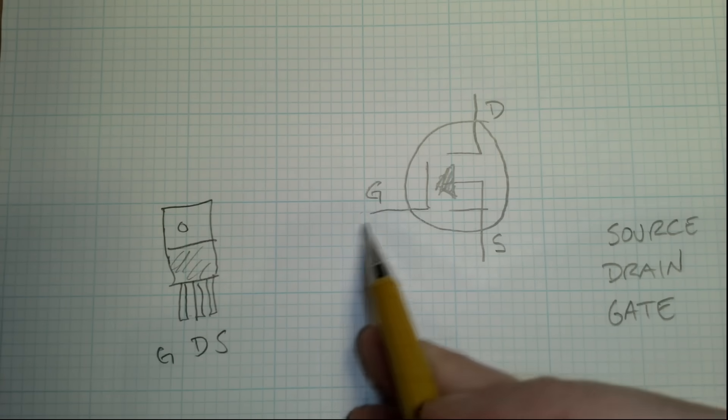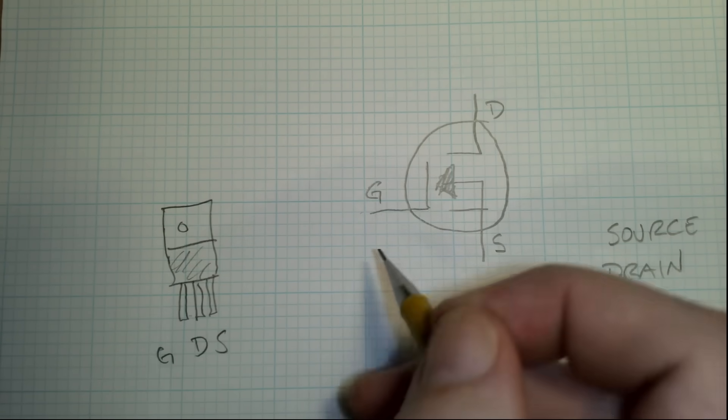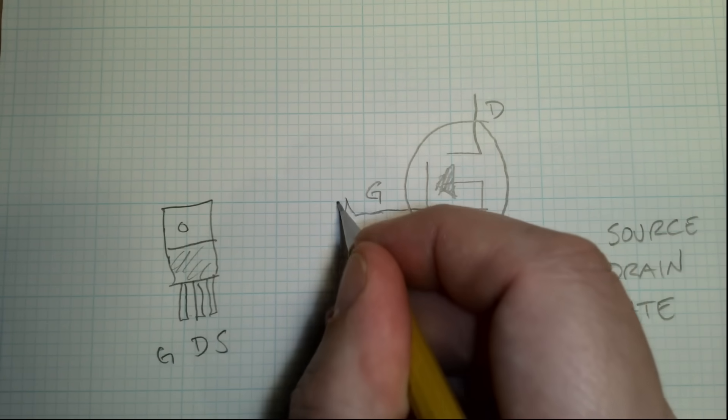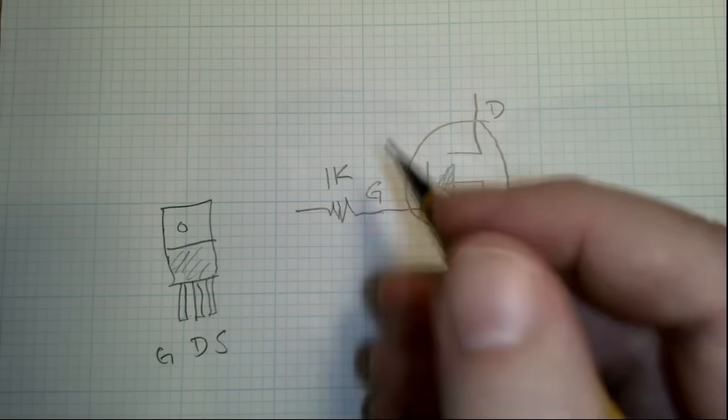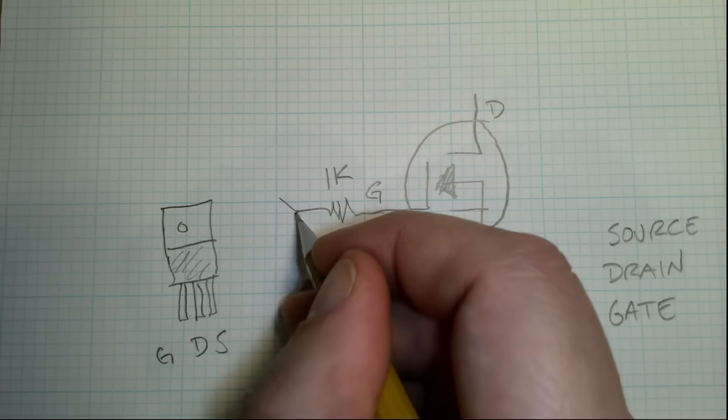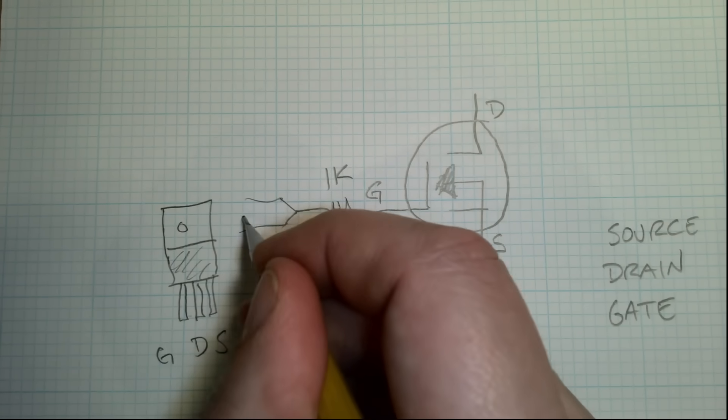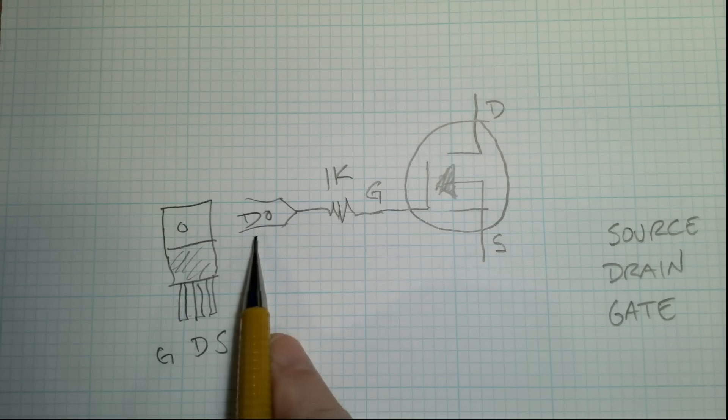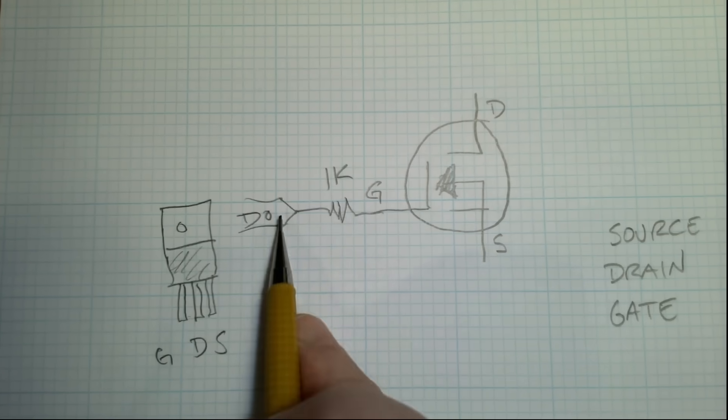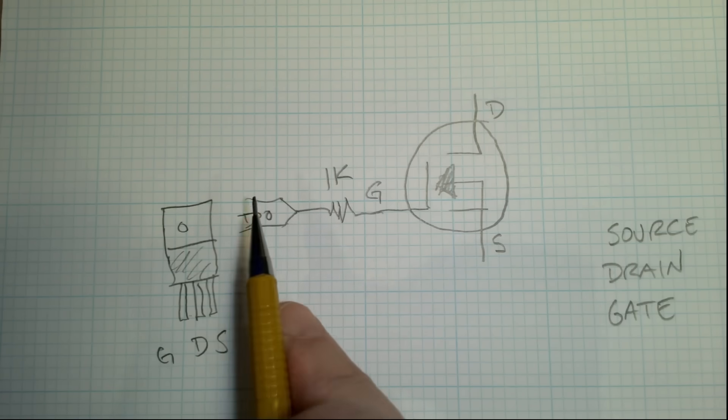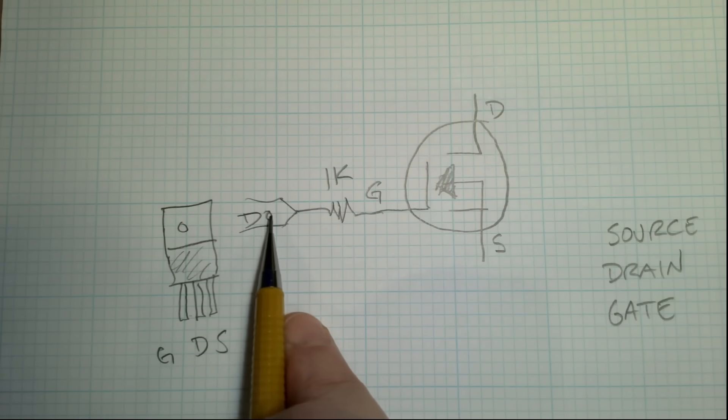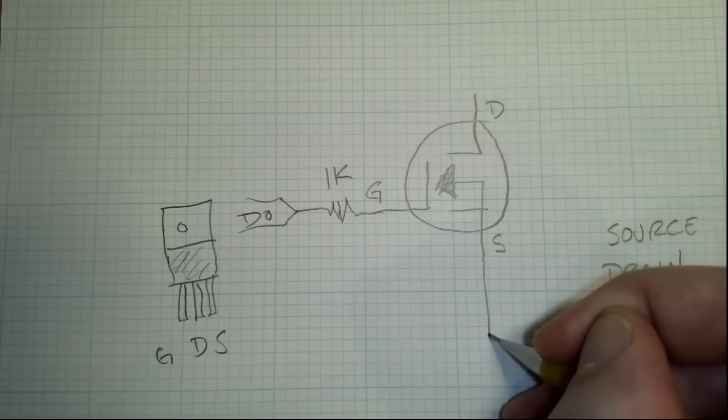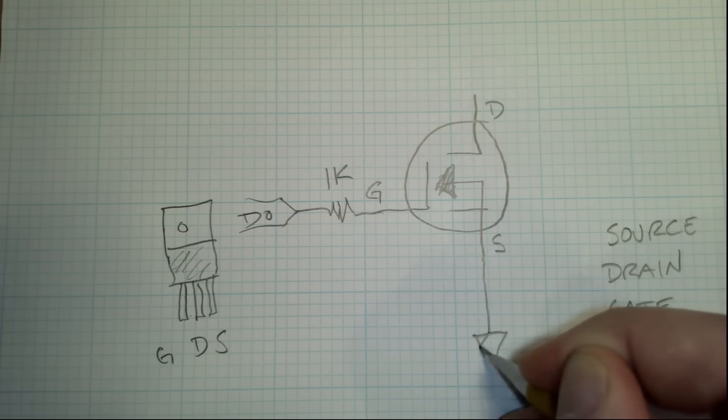This gate, this is what we're going to control it with from our microcontroller. You should put in a resistor here, say 1k, somewhere in that range. And that will limit current through this. And this will hook to our digital output. So that simply limits the amount of current flowing through here. Helps protect your microcontroller from overcurrent and burning out your digital output. The source, this is really easy. We just hook that direct to ground.